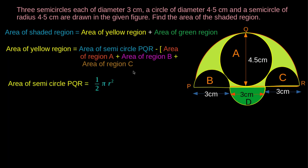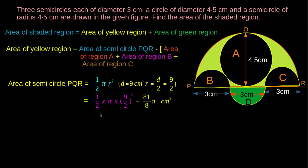The area of semicircle PQR is equal to half π R². Here, D is equal to 9 cm, so R is equal to D/2, that is 9/2 cm. Therefore, the area of semicircle PQR is equal to (1/2) × π × (9/2)² = 81/8 π cm².